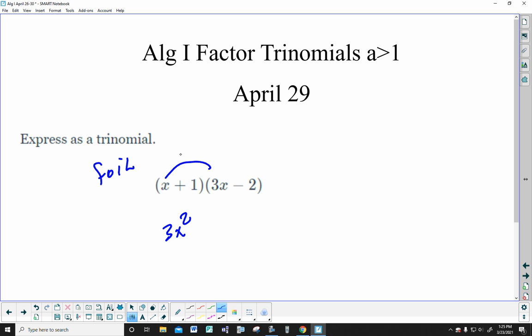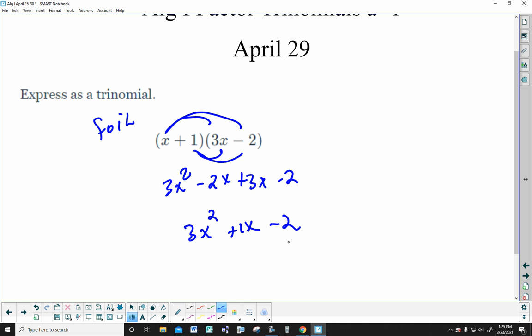3x squared outside minus 2x inside plus 3x last minus 2. So that simplifies to 3x squared plus 1x minus 2. Now, the pattern we have been doing is you're looking for what multiplies to the end, but adds to the middle. So, 2 and negative 1 would multiply to negative 2, but add to 1. So this could be it.